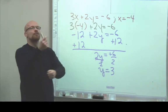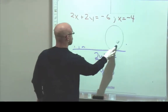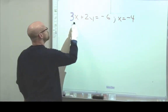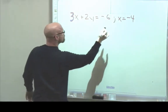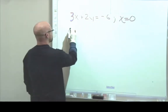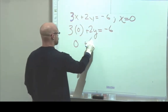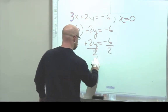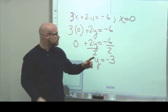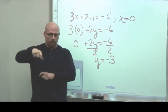Now suppose x equals 0 — we're going to replace x with 0. What we find is that when x is equal to 0, we get y equals negative 3. We'll put it back on the table.